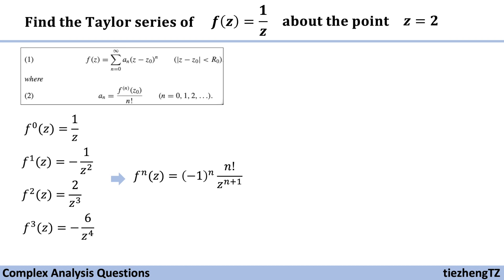We can try substituting n = 0, 1, 2, 3 to verify that our derived general form of the nth derivative is correct. The next step is to do the simple substitution into the given functions to figure out the Taylor series.